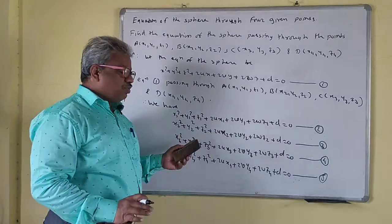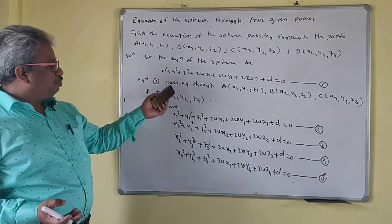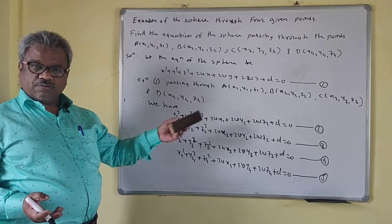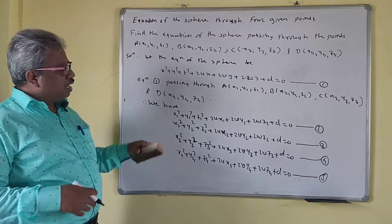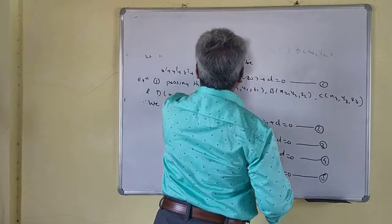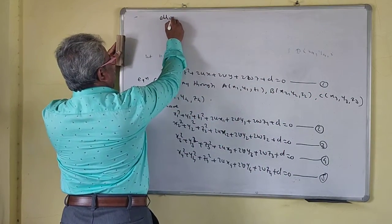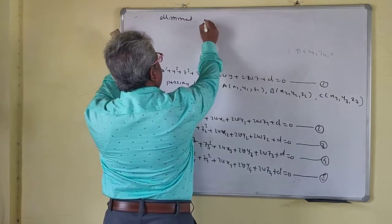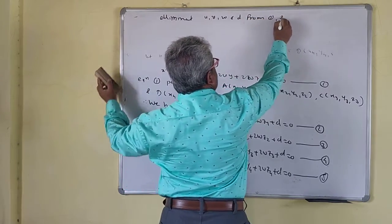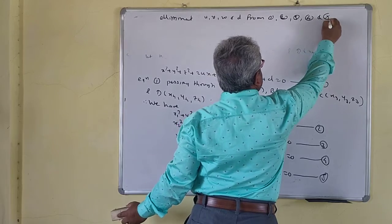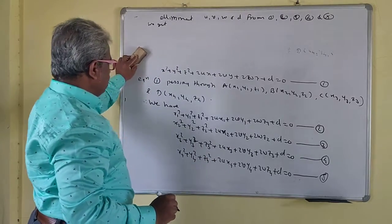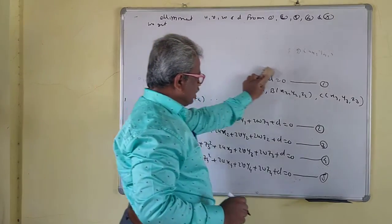With the help of points A, B, C, D, once we get the values of u, v, w, d, we substitute them back. These are four equations in four unknowns. Instead of solving directly, what we do is eliminate u, v, w, and d from equations 1, 2, 3, 4, and 5. We get a determinant — so I will set that up now.